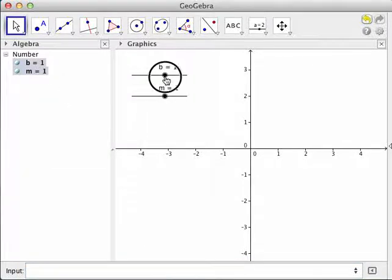Okay, so as you can see we can move the slider and the default values are from negative 5 to 5.